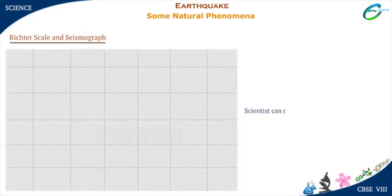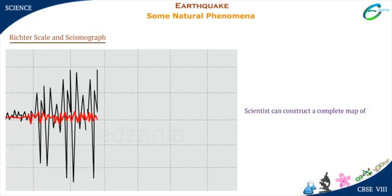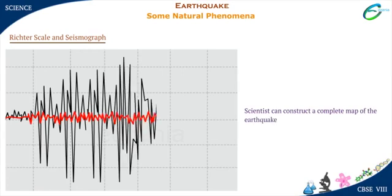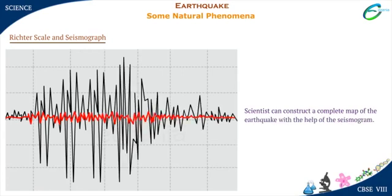The record is called the seismogram. Scientists can construct a complete map of the earthquake with the help of the seismogram. It also helps to estimate the power and cause of destruction.